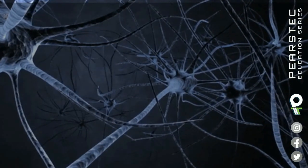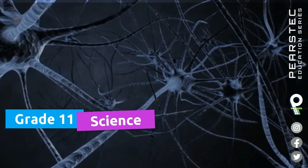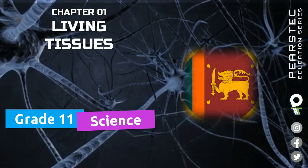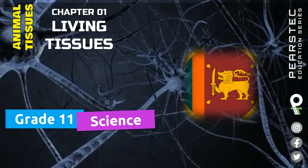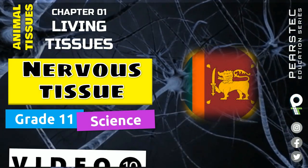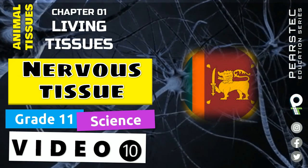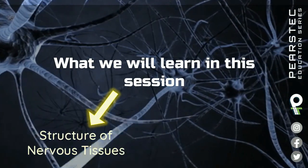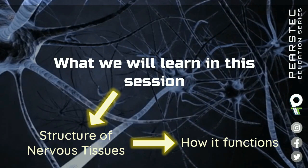Hi. We are in another beautiful chapter — Grade 11 Science as per the Sri Lankan Government School syllabus. We have been learning Chapter 1, Living Tissues. Under Animal Tissues, we are going to see Nervous Tissue today. This is video number 10. Let's understand the nervous tissue in a nice way. We will learn the structure of the nervous tissue and how it functions.